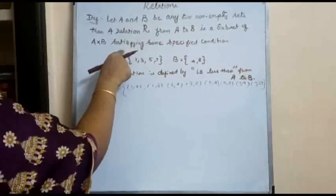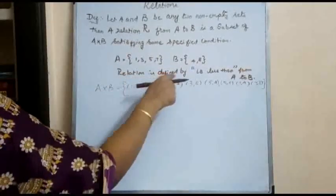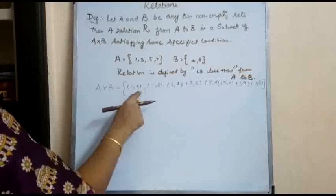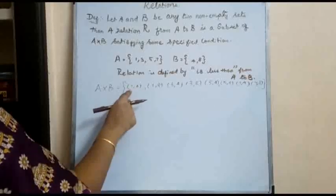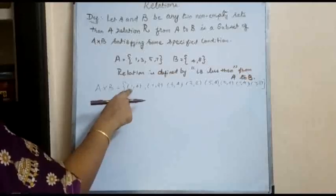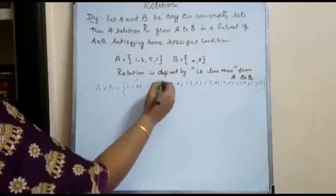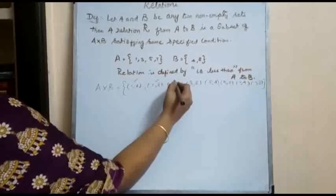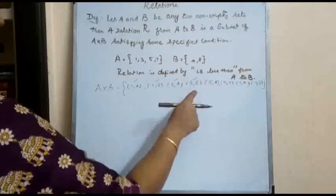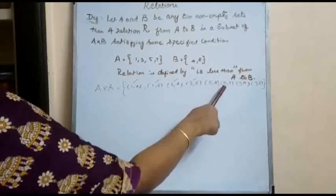Here we have to satisfy some specific condition. The relation is defined as 'is less than' from A to B. So: 1 is less than 4 and 1 is less than 8 — these satisfy the relation. 3 is less than 4 — yes, it satisfies. 3 is less than 8 — satisfies. 5 is not less than 4, so this does not satisfy the relation.